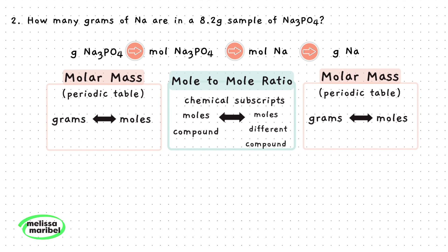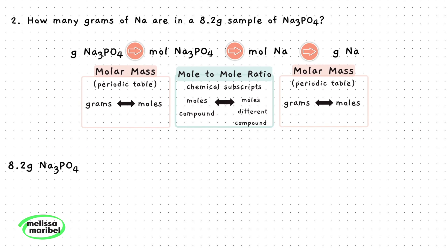Now that we have our plan, let's set this up. Starting with 8.2 grams of sodium phosphate, we want to convert this to moles of sodium phosphate, so we need to find the molar mass of sodium phosphate. Using my periodic table, I will find the molar mass of each element and multiply by any subscripts shown in the chemical formula, then add this all up.